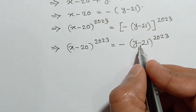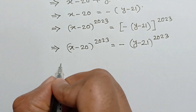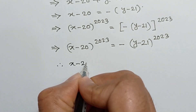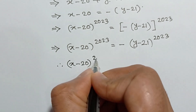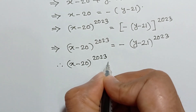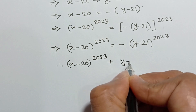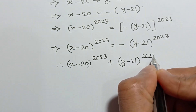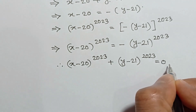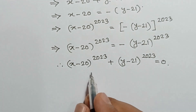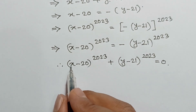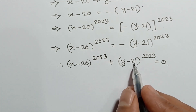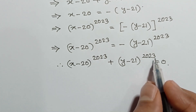Taking the right side to the left, we will have (x minus 20) whole to the power 2023 plus (y minus 21) whole to the power 2023 is equal to 0. So, this is the value of (x minus 20) to the power 2023 plus (y minus 21) whole to the power 2023.